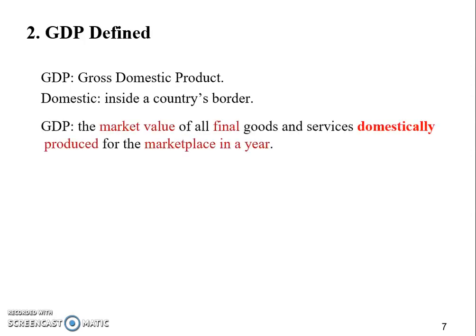So here is the definition of GDP. We simply add one more word into the definition of output measure. The GDP is the market value of all final goods and services domestically produced for the marketplace in a year.